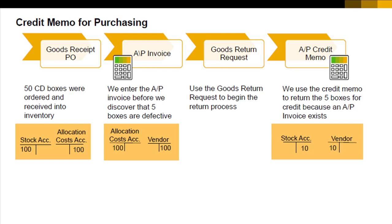However, in some cases it may not be appropriate to copy items to a credit memo from an invoice. For example, if the credit was for a price difference rather than for returning items, or if the credit referred to an AP invoice that we had already paid.